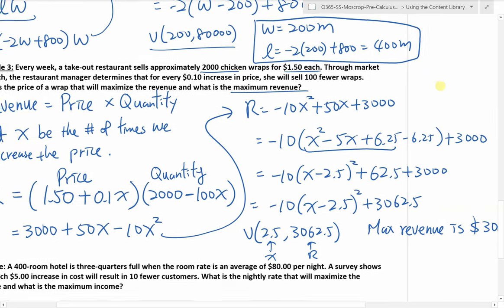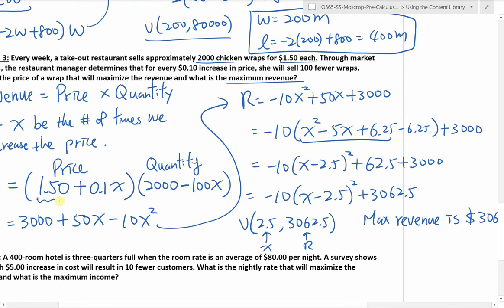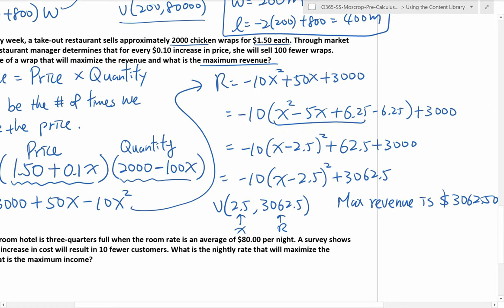There's also a second part of the question: what is the price? Because X is not the price — we plug 2.5 into the price function. Price equals 1.5 plus 0.1 times 2.5, which is $1.75. So if you sell each chicken wrap at $1.75, that will generate the maximum revenue of $3,062.50.